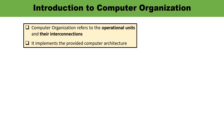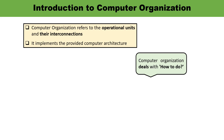To understand computer organization, how to define it: computer organization means you have to explain how the operational units are interconnected. If you are talking about a general purpose computer, how all the units are interconnected. It implements the provided computer architecture — first computer architecture must be available, then only it is going to implement it. So, computer organization deals with how to do.